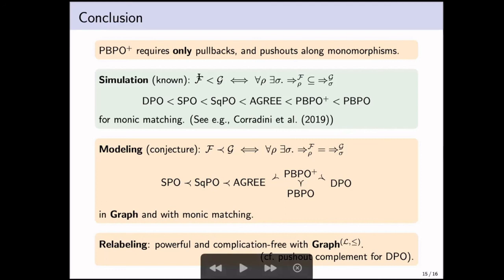Now, it was already known, for instance if you look at the PBPO paper by Corradini and his colleagues, that we have this simulation hierarchy. So simulation means that F is simulated by G if for any F rule, you can find the G rule that contains the rewrite relation. Simulation is known for monic matching using some mild restrictions for DPO and SPO. But if you're interested in modeling, so instead of containment getting the exact same rewrite relation, then the situation is different. We conjecture that in graph and with monic matching, we obtain this kind of structure. So if this is true, then PBPO+ can be viewed as a nice unification of these formalisms.